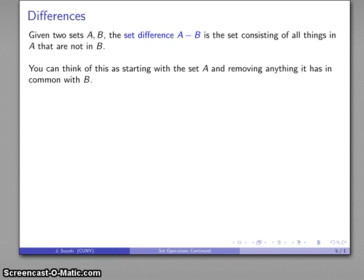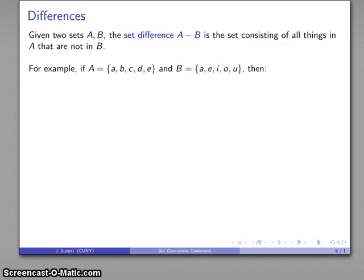You can think about this as starting with the set A and then removing anything in that set that has something in common with B. For example, if A is as given, B is as given,